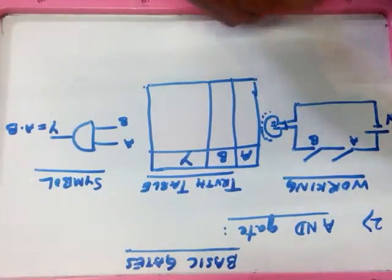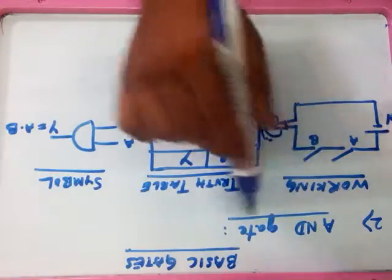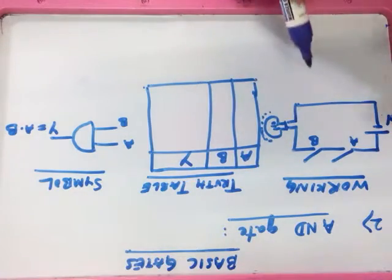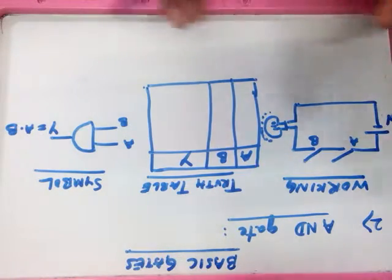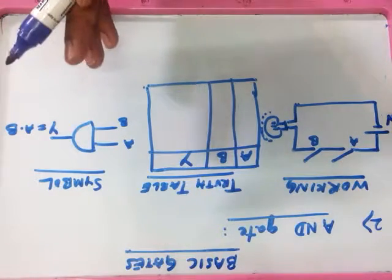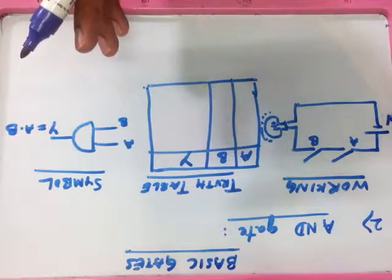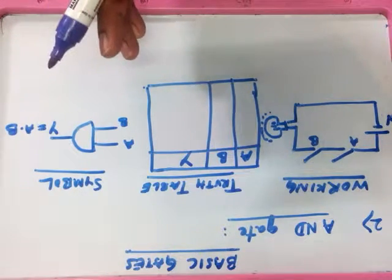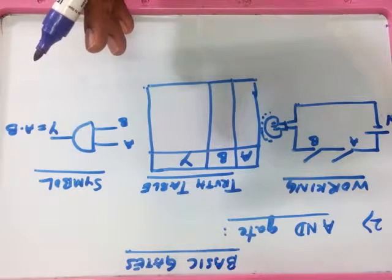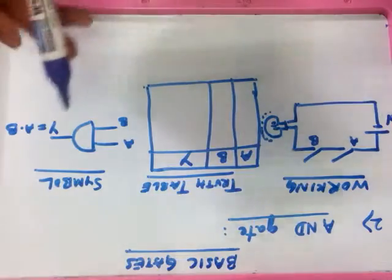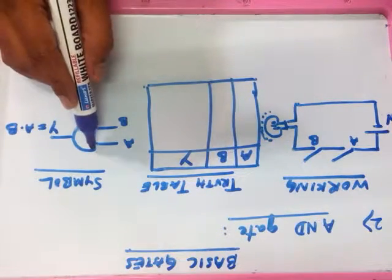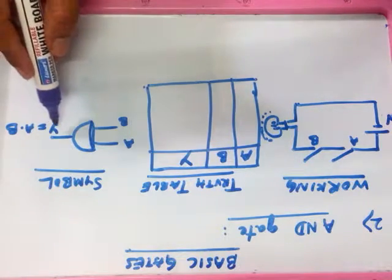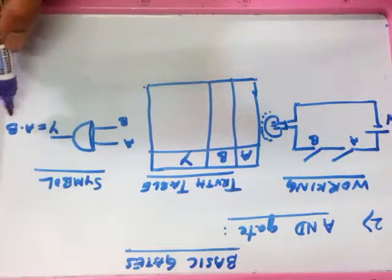The next basic gate is the AND gate. We are going to look at its truth table and symbol. The symbol of the AND gate looks like a half circle that is cut in half, having two inputs, whose output is equal to A dot B — which is similar to multiplication but pronounced as 'A AND B'.